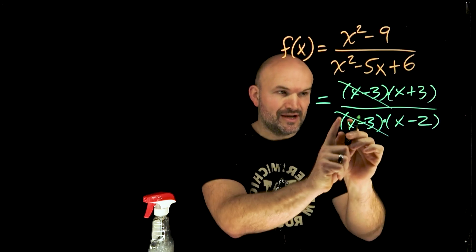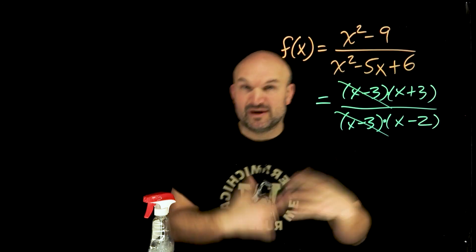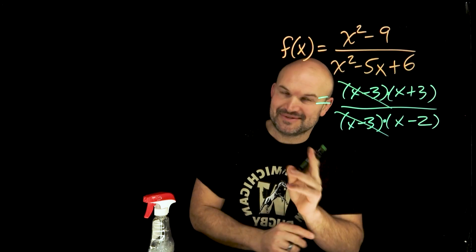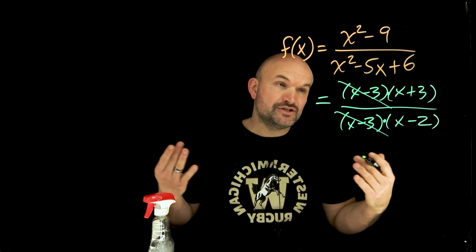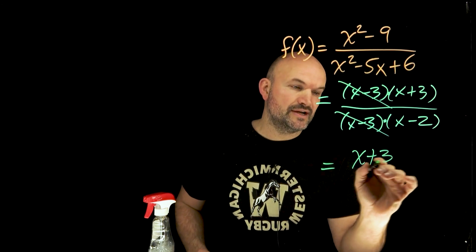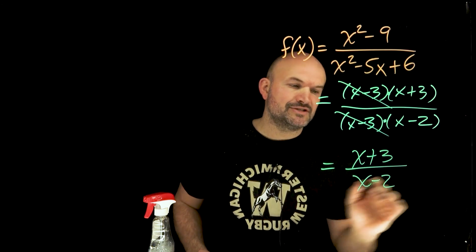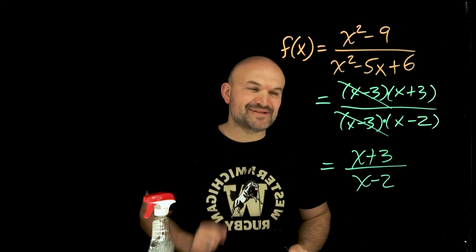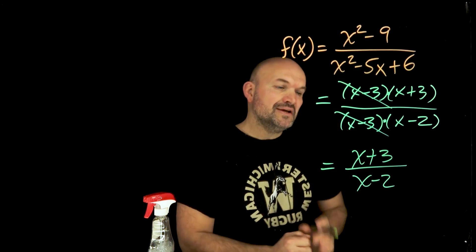So basically you have one times x plus three and one times x minus two. So it's not like they went away. We didn't cancel them out. Don't say that. They divided into one. Now we don't really need to represent that one though because it's multiplication. So now I have x plus three divided by x minus two.